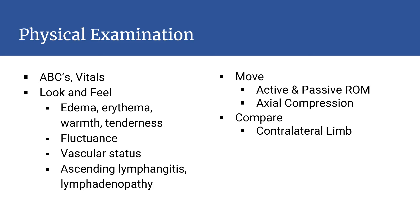To assess the vascular status, review the skin's color — if it is pale or violaceous — the temperature, and the cap refill. Examine the patient's active and passive range of motion, and perform axial compression across the joint of concern to assess for septic arthritis. More severe infections may show palpable crepitus, skin necrosis, or signs of compartment syndrome: pain, pallor, paresthesia, pulselessness, and paralysis. Additionally, look for lymphangitic spreading and lymphadenopathy, and make sure to compare your findings with the contralateral limb.